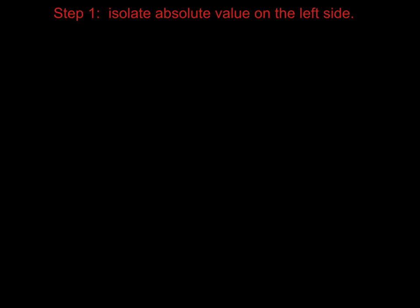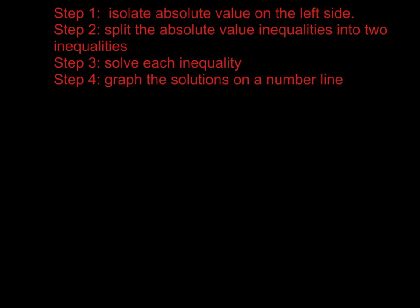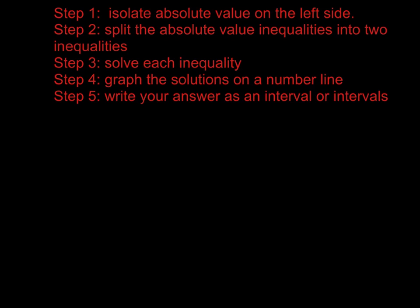I'm going to give you the following steps so that you can solve these. The first step is to isolate your absolute value on the left side — just isolate the absolute value, get all the other stuff away from it. Step two, we're going to split that absolute value inequality into two different inequalities. Just like we did when we were doing the equations, we're going to do one with the positive version of what's inside of the bars and one with the negative version. Step three is to solve each inequality. Step four, graph those solutions on a number line. And step five, write your answer as an interval or intervals, as the case may be.